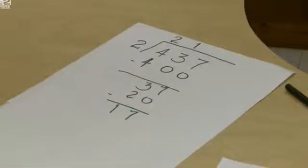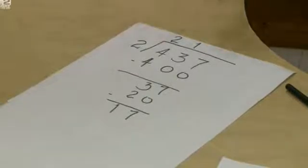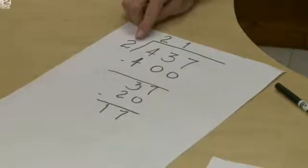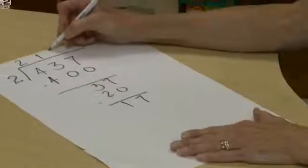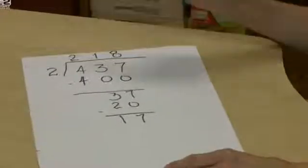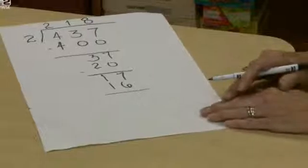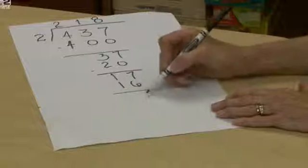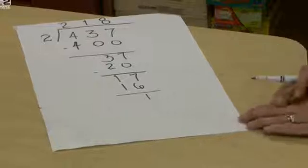We have seventeen ones. Is that enough ones to give at least one to each of the two equal groups? It is. We'll bring in our multiplication knowledge: if we gave eight ones to each of the two equal groups we could distribute sixteen ones. So we're going to record eight ones into each of the two equal groups for a total of sixteen ones. Using subtraction: six ones from seven ones leaves one one. One ten from one ten leaves no tens.